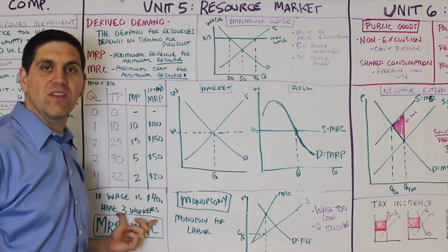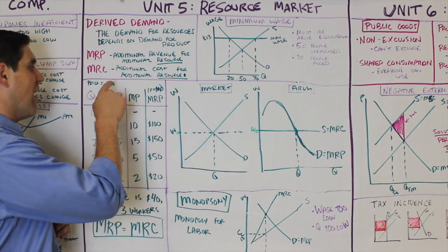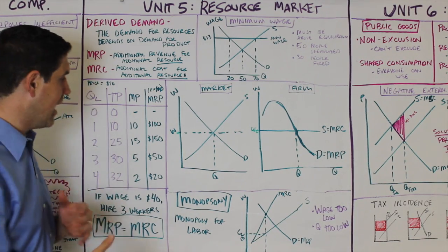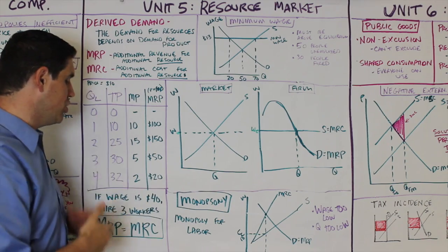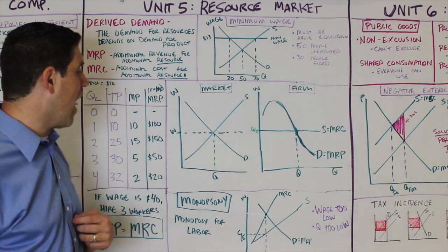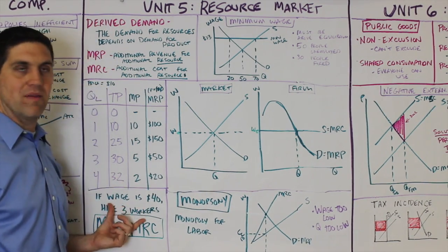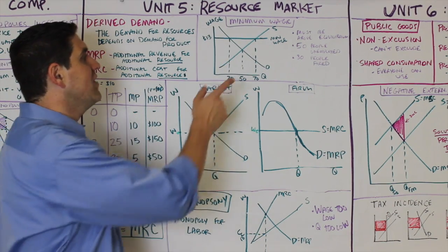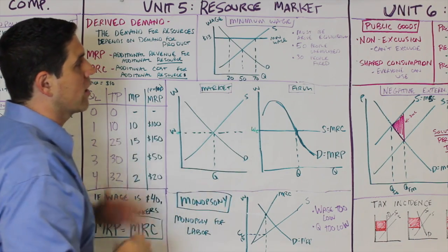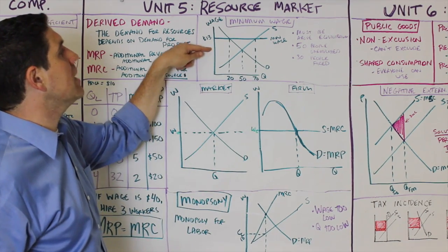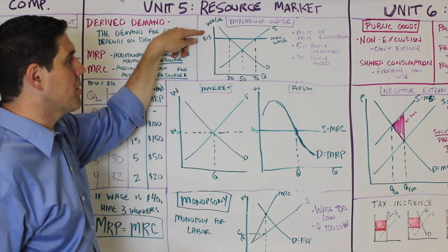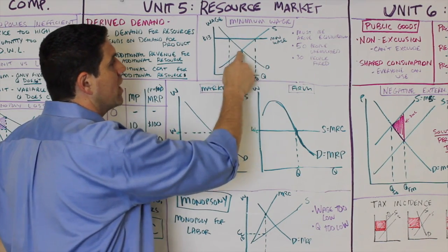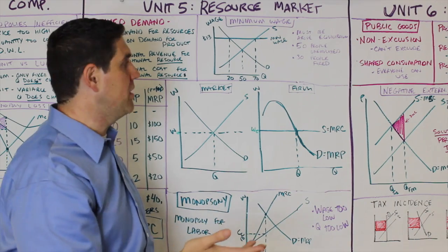To apply this concept, if given a price and total product with quantity of workers, you calculate the number of workers to hire and the profit. Another concept is the actual resource market graph. If there's a minimum wage above equilibrium — a wage floor — that causes quantity supplied to go up and quantity demanded to go down, causing unemployment.